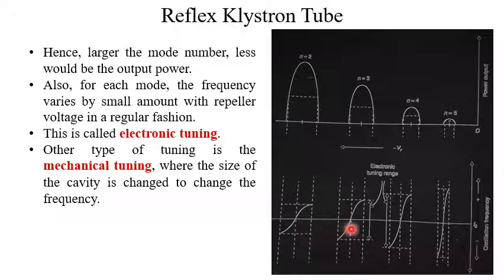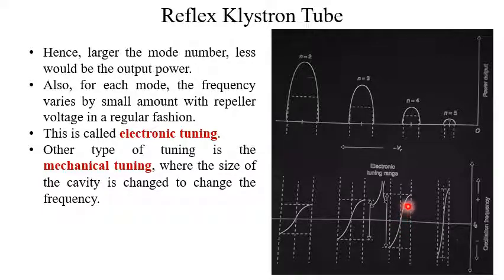Also, for each mode, the frequency varies by a small amount with repeller voltage in a regular fashion — this is called electronic tuning. If we adjust the repeller voltage within a certain limit, there is a small change in frequency around F₀: decreasing the magnitude of the repeller voltage slightly increases the frequency, and vice versa — maybe tens of megahertz change. The other type of tuning is mechanical tuning, where the size of the cavity is changed to change the frequency, and that change can be in the gigahertz order range.